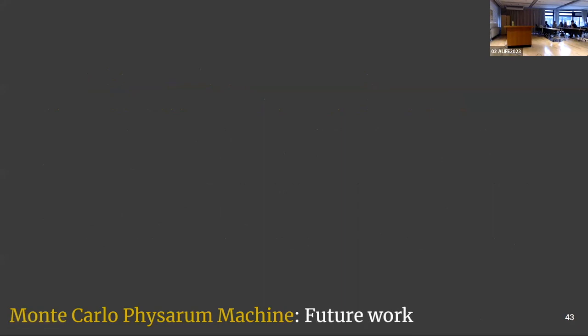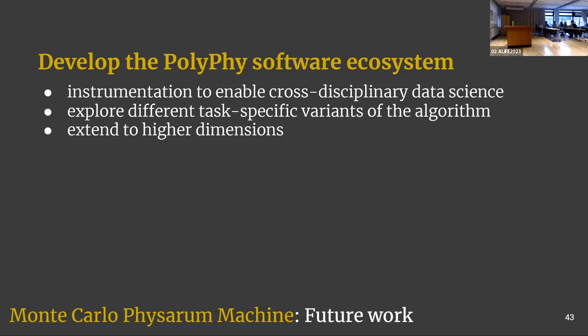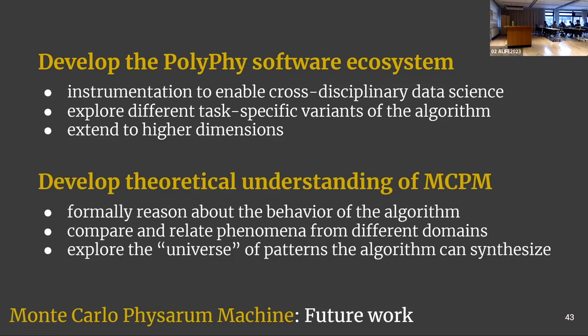I want to mention two directions for future work. One is developing this piece of software — if any of you feel inclined to help, along with the whole team of dozens of people now involved, we need all the help we can get. The second direction is theoretical: if somebody can help us mathematically reason about these things, that would be great. Because so far we don't know. If we had that, we could simulate these structures across different disciplines and domains and understand why there are so many network-like structures in nature and what they have in common.